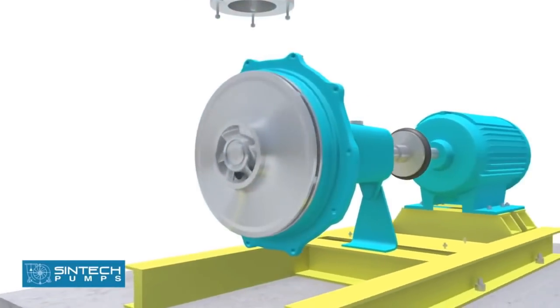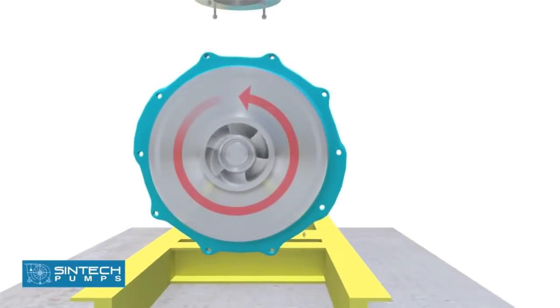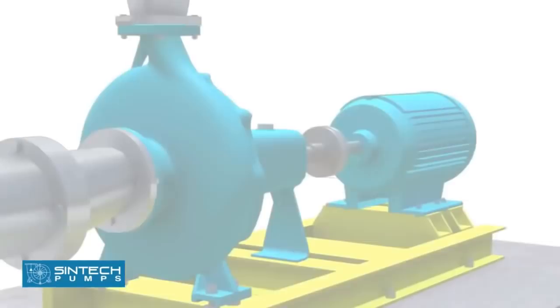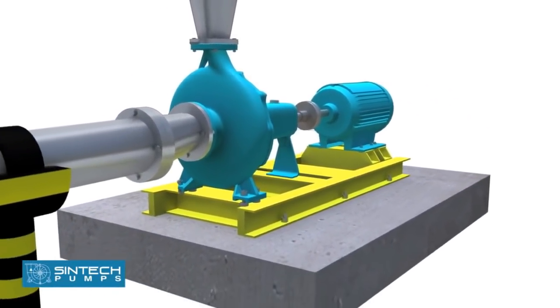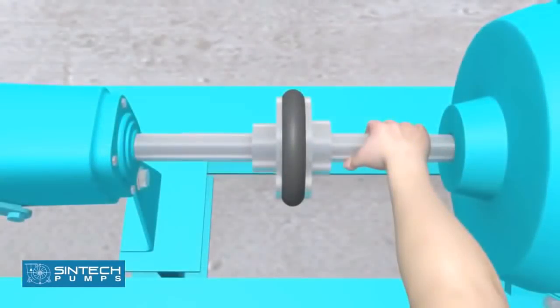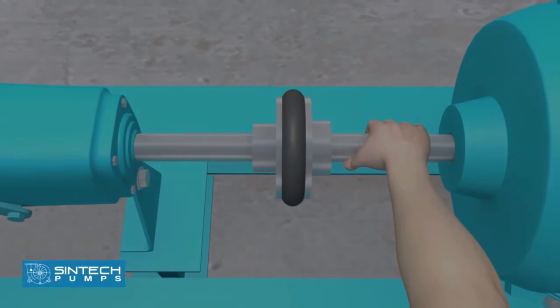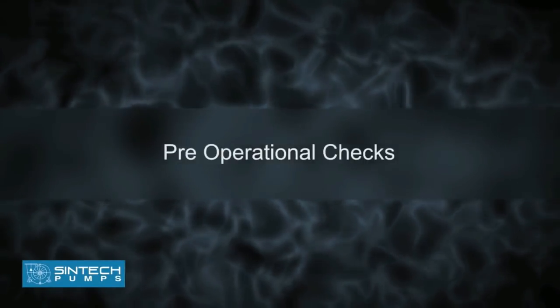The motor should be wired correctly to ensure the correct direction of rotation. This check has to be carried out before the pump is coupled. Once the pump and motor have been coupled, test the movement manually by rotating it by hand to see if the pump is rotating smoothly. Pre-operational checks: